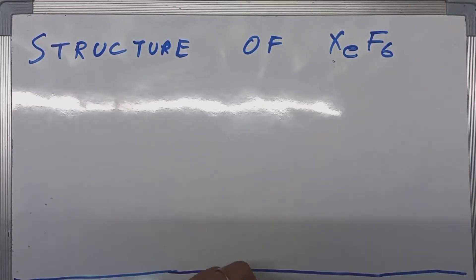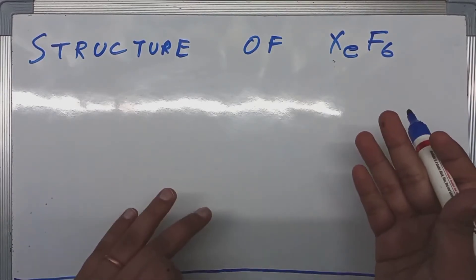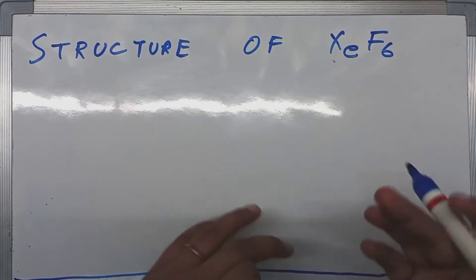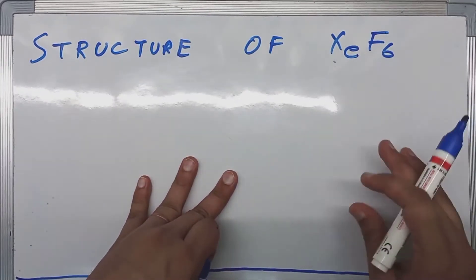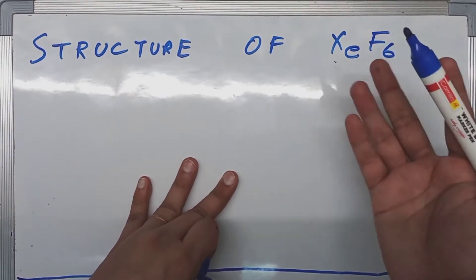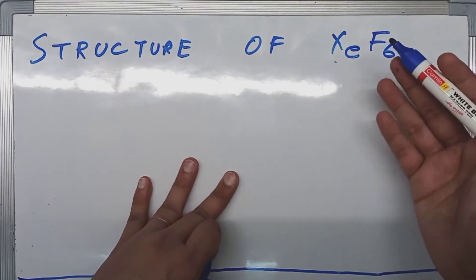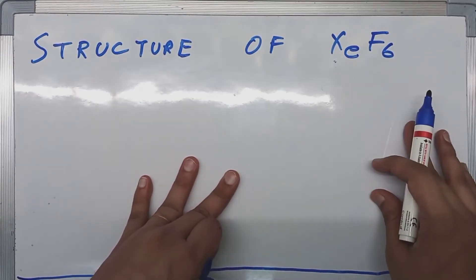We want to draw the structure of XeF6. In order to do that, we need to find out the hybridization of this particular molecule. We will count the valence electrons of every single atom present in this molecule. Xenon is an inert gas element, and fluorine belongs to the halogen family.